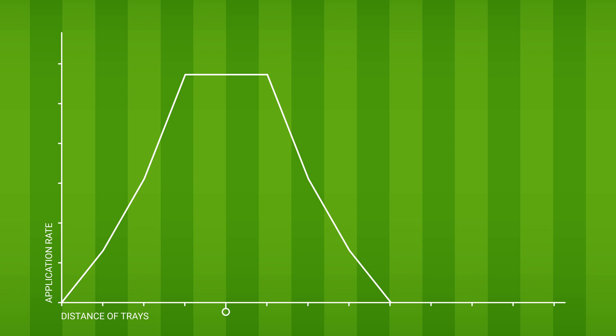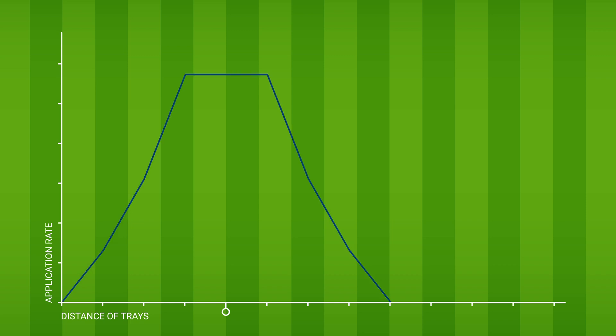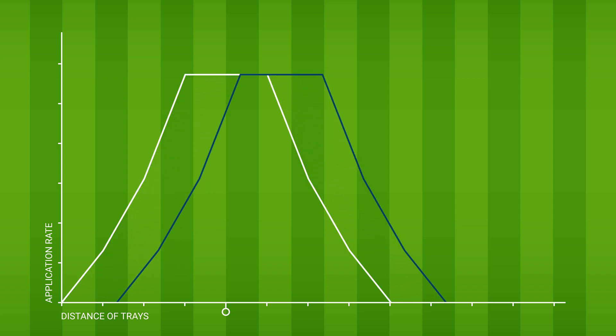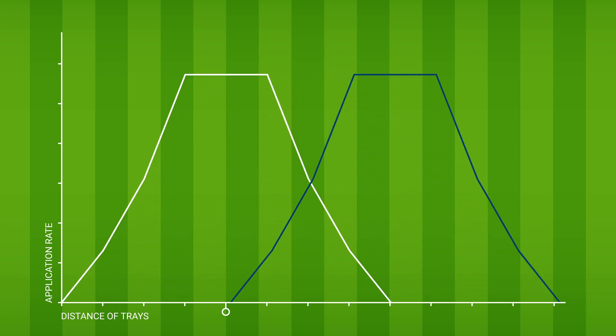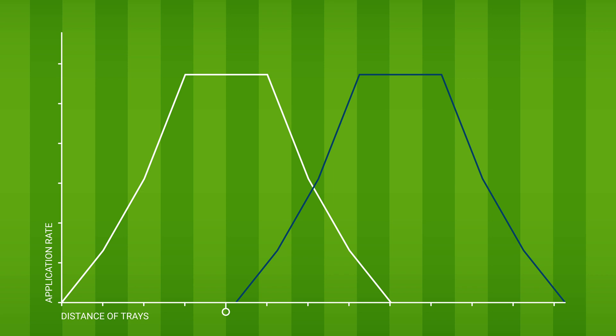As we need to achieve a uniform application rate, it is important to determine the optimal overlap bout width. The easiest way to do this is to trace the shape of your graph onto tracing paper. Place the trace exactly over the original graph and then start to slide the traced shape sideways until it intersects halfway down the triangular slope of the original graph. The distance between the center of the original and the traced graphs is the optimal bout width.